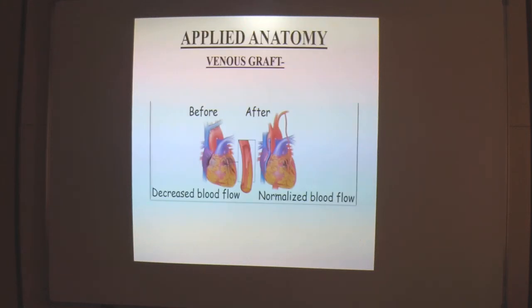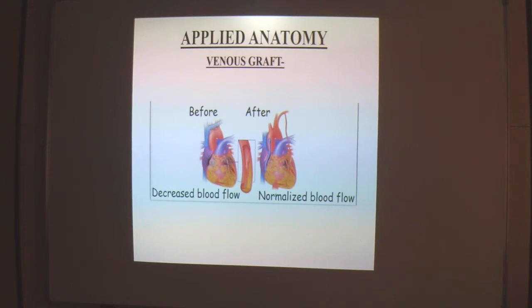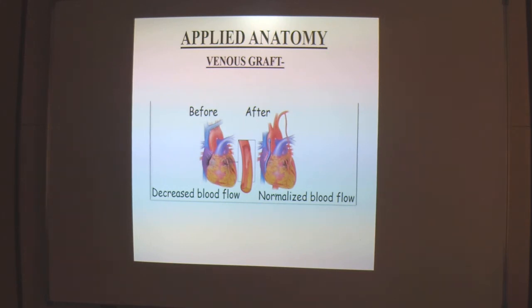Regarding the applied anatomy: for venous grafting in bypass surgery, the GSV has been used classically in blockage of the coronary arteries. When blood supply to the heart is compromised, we bypass blood from the blocked coronary artery to directly supply the affected myocardium, preventing infarction. Previously, venous grafts using the great saphenous vein were used. Nowadays, we preferably use an arterial graft taken from the internal thoracic artery, directed to the affected myocardium to normalize blood flow.